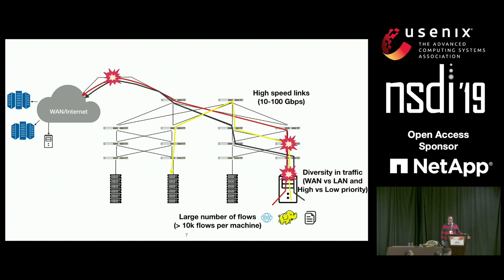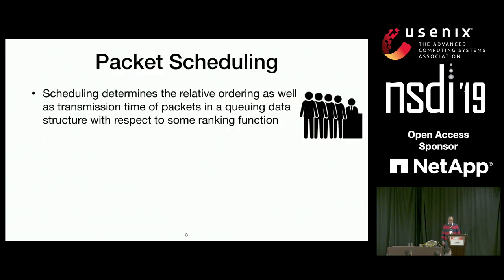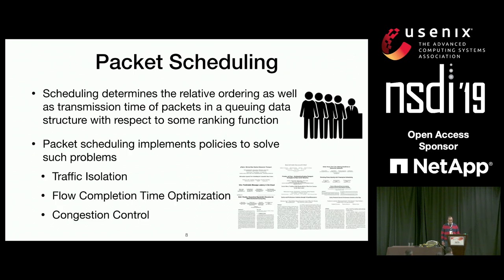Solving any of these problems requires some form of scheduling — by which I mean the determination of relative ordering of packets, as well as their transmission time, according to some ranking function. Defining this ranking function has been at the center of many research efforts on traffic isolation, flow completion time optimization, and congestion control.